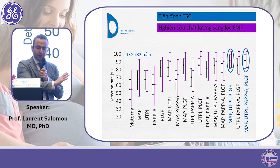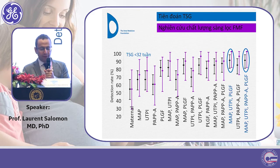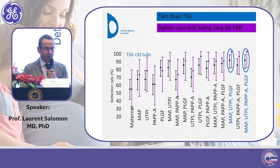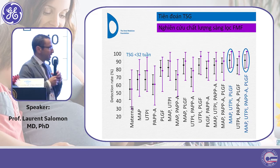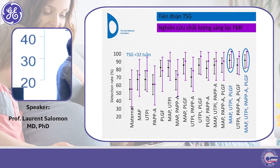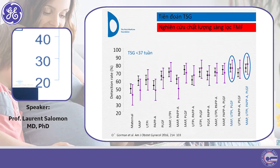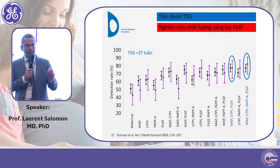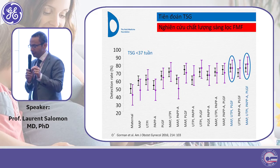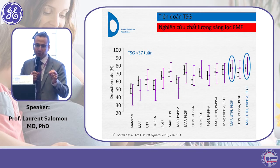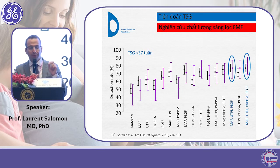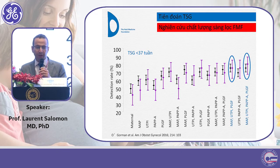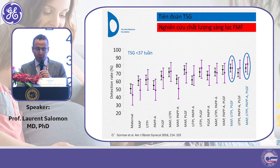This screening strategy works very well and has been confirmed in many studies, especially if you strictly follow the quality criteria for mean uterine artery PI measurement and mean blood pressure measurement. The performance of this screening strategy is really good.